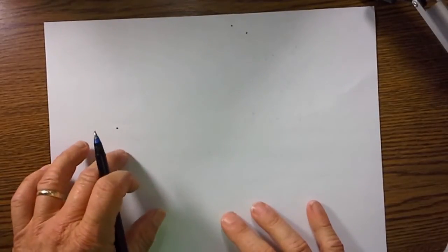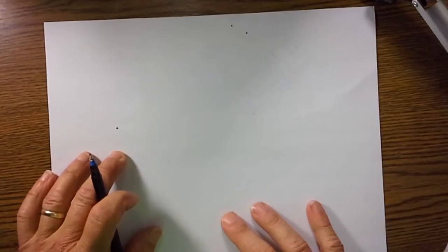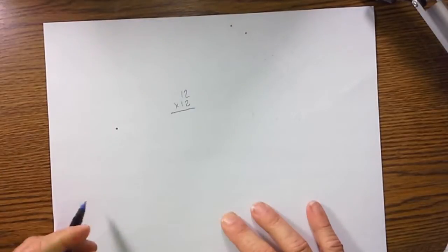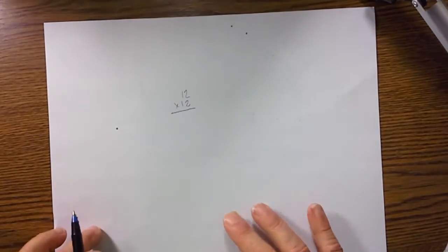I kind of see this as straddling somewhere between a math trick and a viable method. Let's start with a fairly easy one, 12 times 12, and let's get started.